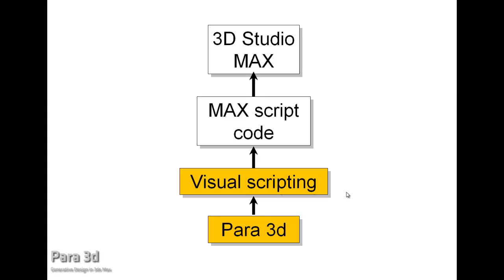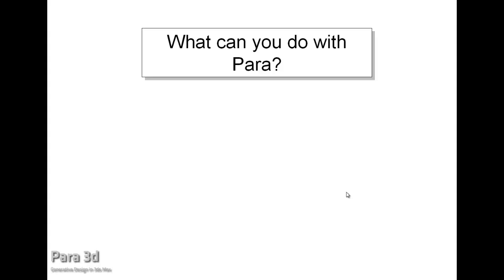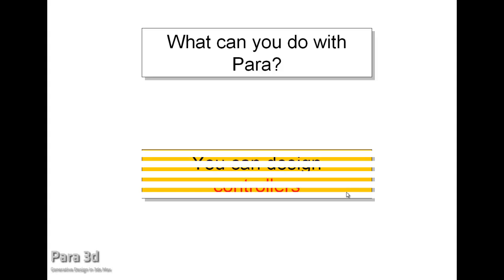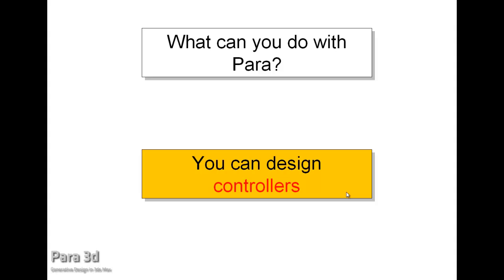And here Power3D comes to help write codes within 3ds Max without having deep knowledge in programming. Now let's see what kind of program you can write with Power. Among all types of programming codes that you can do with Maxiscript, there is only one type of program that you can write with Power, and that type of program is called controllers.